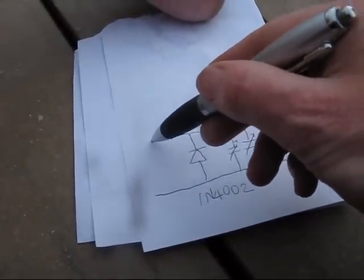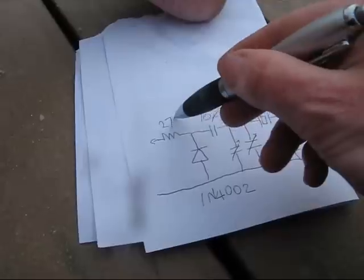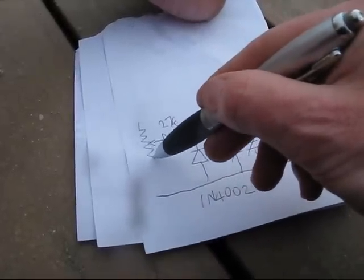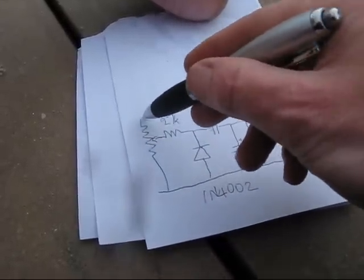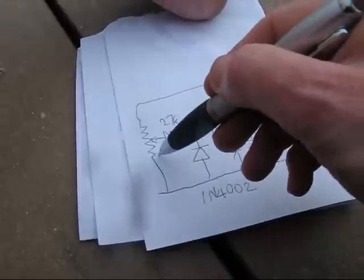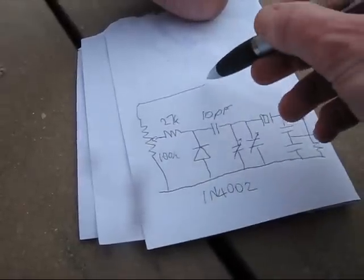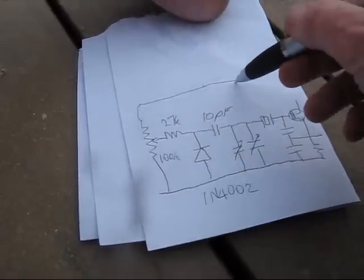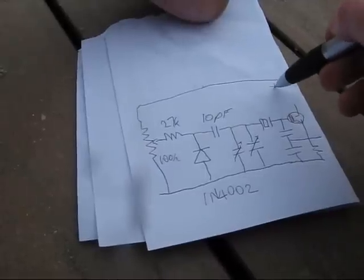Resistor, that's 27k. Potentiometer, that is 100k, and the top of the potentiometer goes to your positive rail.